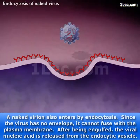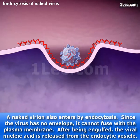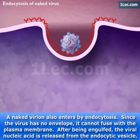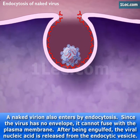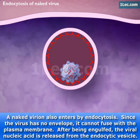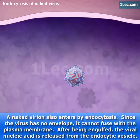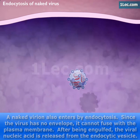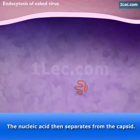A naked virion also enters by endocytosis. Since the virus has no envelope, it cannot fuse with the plasma membrane. After being engulfed, the viral nucleic acid is released from the endocytic vesicle. The nucleic acid then separates from the capsid.